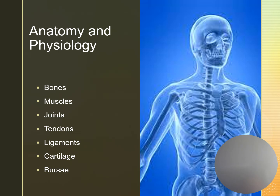Within the bone, we have bone marrow. Red bone marrow is found in the sternum, ileum, vertebrae, and ribs, and it manufactures blood cells and hemoglobin. Yellow marrow is found in the long bones and is made up of fat cells and connective tissues. It can take on the characteristics of red marrow and manufacture blood cells and hemoglobin if necessary.